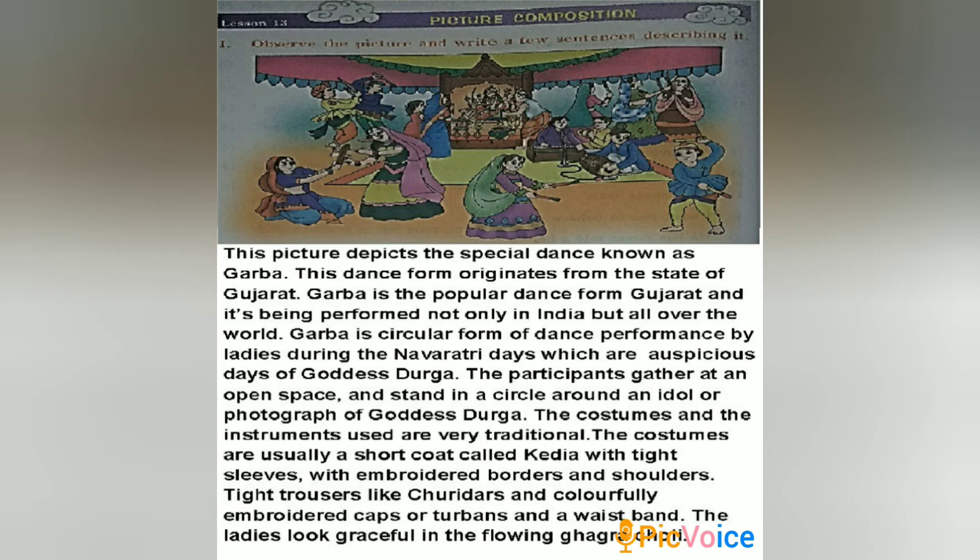The participants gather at an open space and stand in a circle around the idol or photograph of Goddess Durga. The costumes and instruments used are very traditional. The costume is usually a short coat called Cadia with tight sleeves with embroidered borders and shoulders, tight trousers like the churi darts, and colourfully embroidered caps or colourful turbans and a waistband. The ladies here look graceful in the flowing Gagra choli. They enjoy dancing, and through this dance they ask God and Goddess Durga to help them overcome evil.